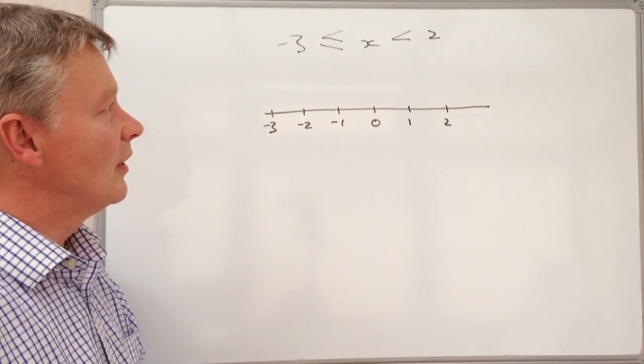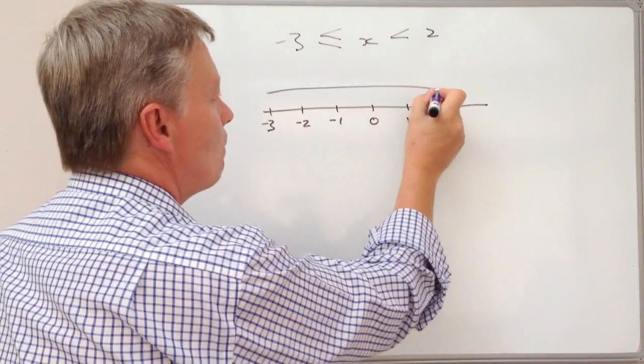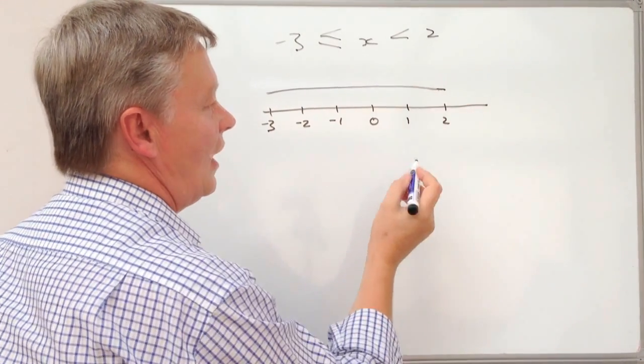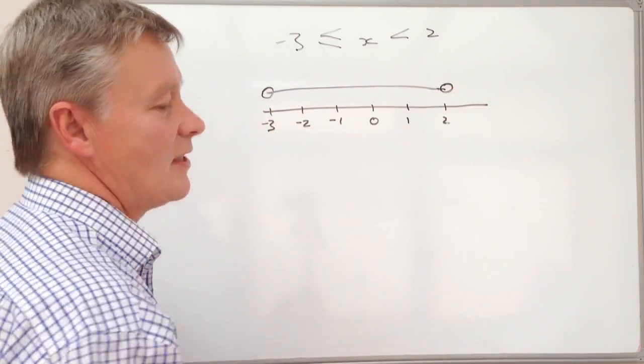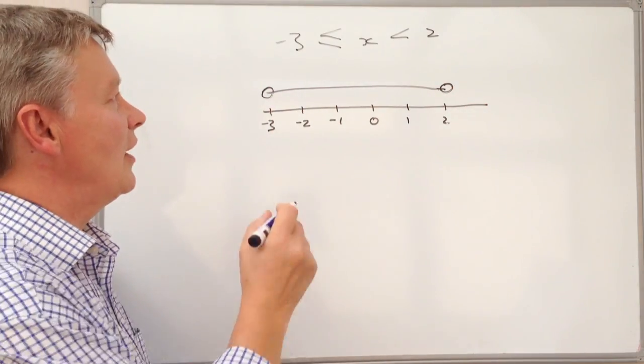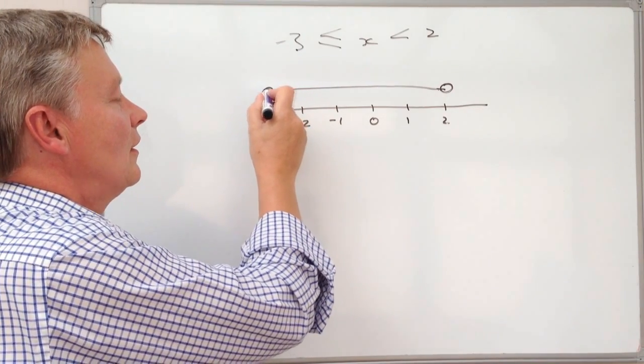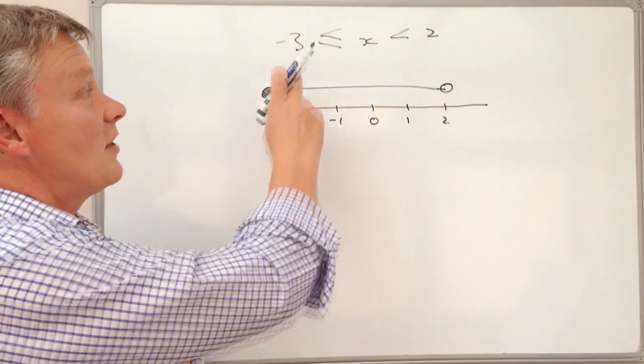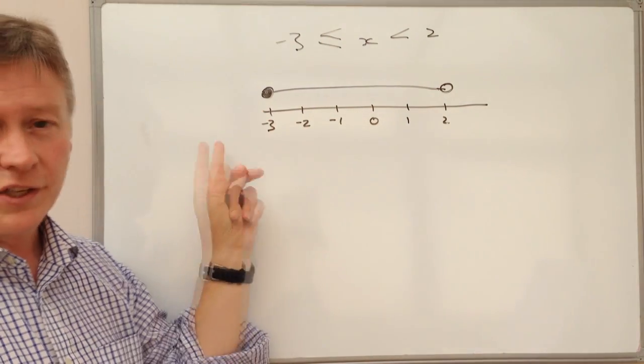And one of the ways that you can look at it is that if you draw a line between these two values, and if you've got a circle at both ends, what we generally tend to do is we mark this as a closed circle. In other words, this inequality includes the -3 value.